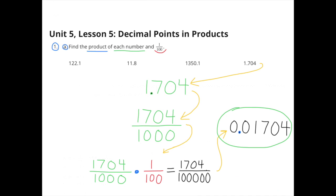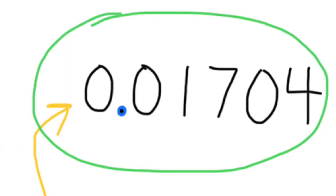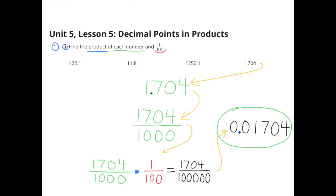One and seven hundred four-thousandths can be rewritten as one thousand seven hundred four over one thousand. One thousand seven hundred four-thousandths times one-hundredth equals one thousand seven hundred four hundred-thousandths. This number ends in the hundred-thousandths place, so the four is in the hundred-thousandths place, and the decimal is always between the ones place and the tenths place. The final product is one thousand seven hundred four ten-thousandths.